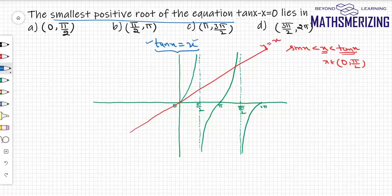Now these two graphs they intersect in the third quadrant. So the answer to this question will be c. So the smallest positive root of this equation will lie in π to 3π by 2.